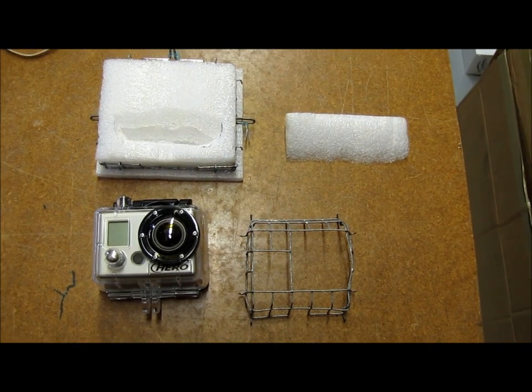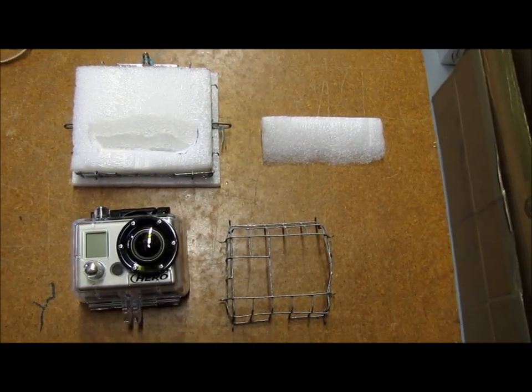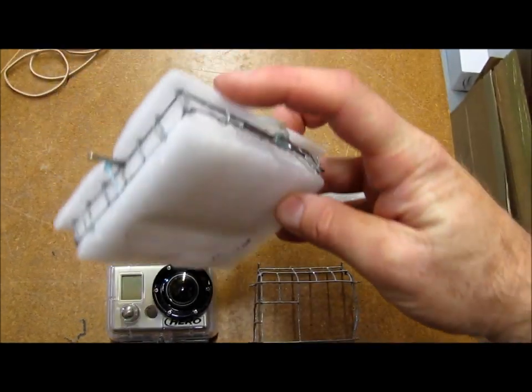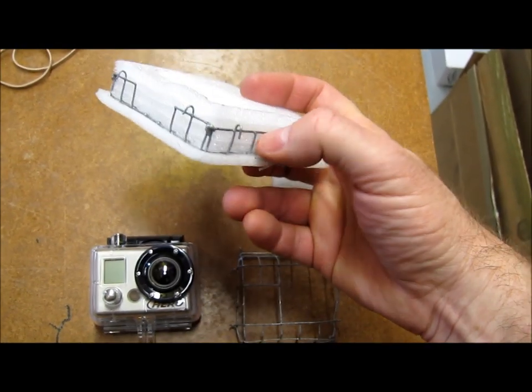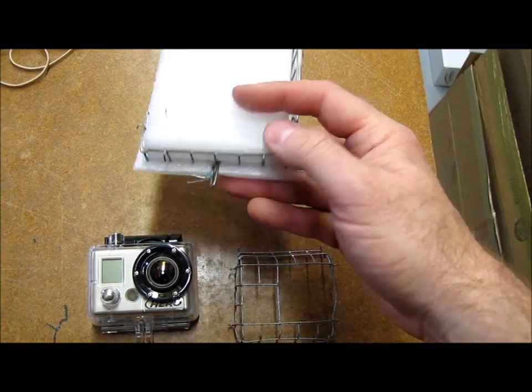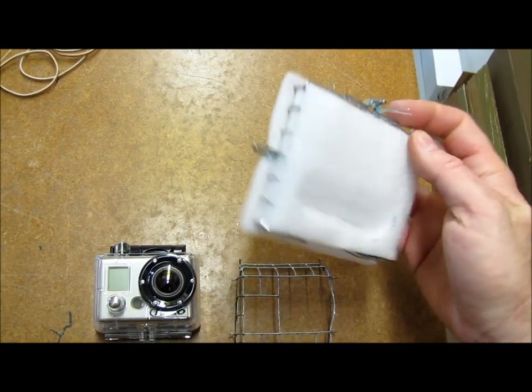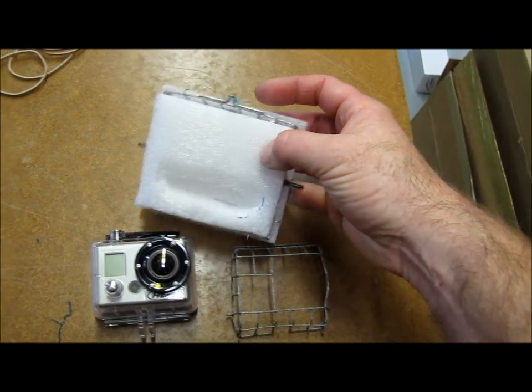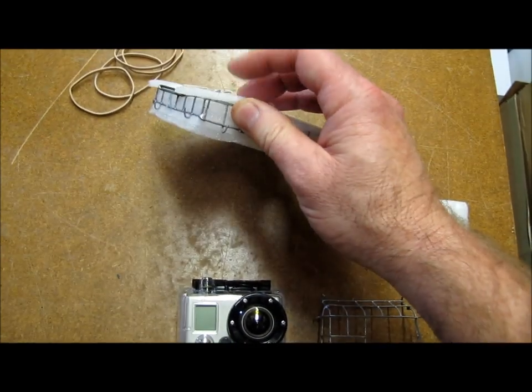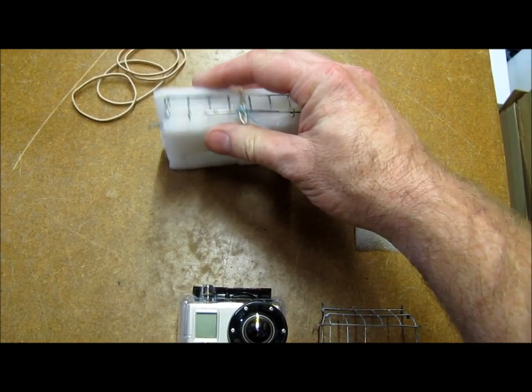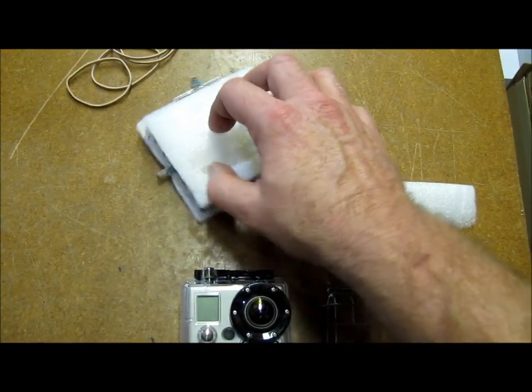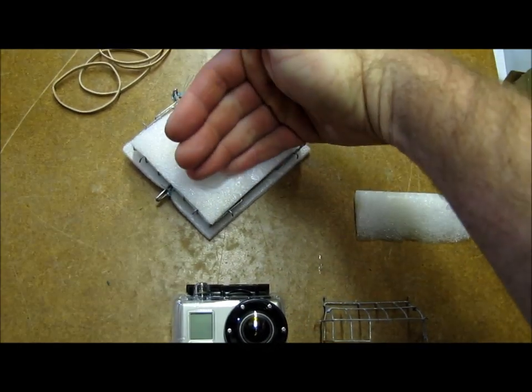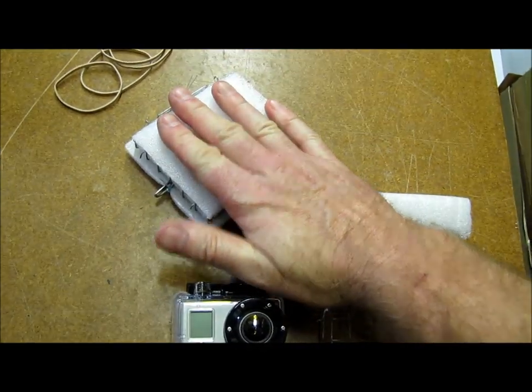Here you can see the basic pieces of my GoPro anti-vibration mount. The back piece is a little wire basket. This is wire mesh or chicken wire available at any hardware store or sort of green landscaping store. A thin piece of rubber-like closed cell foam lines the back of the mount. Then there's a thicker piece with a recess cut into it for the camera to sit in that lines the inside of the basket.